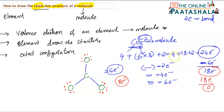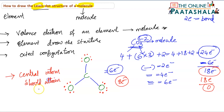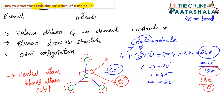Here the important point comes: the central atom should also attain octet configuration. The central atom is carbon, which has a valency of 4. Carbon needs to attain octet configuration, but right now it has only 6 electrons from the three single bonds. It needs 2 more electrons.